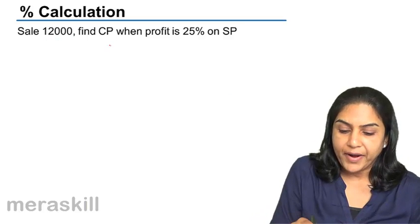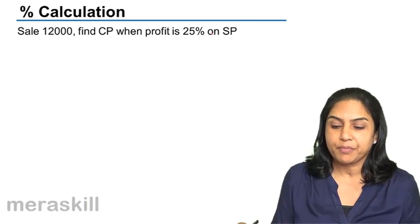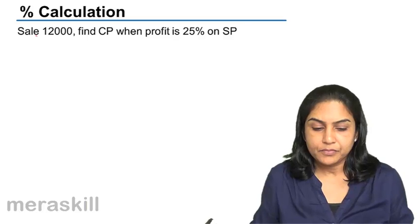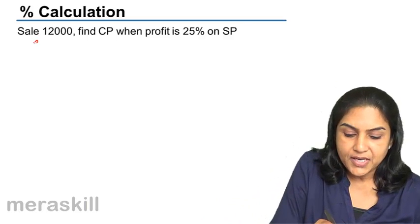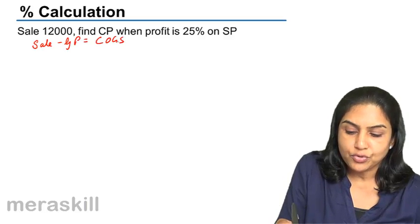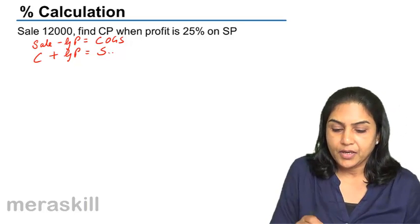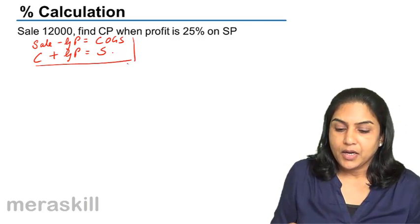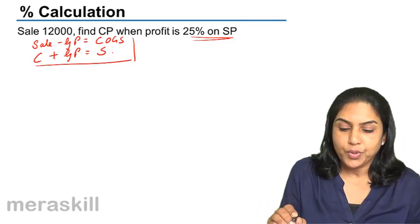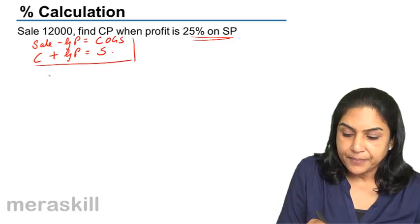Sale is 12,000 — find cost price when profit is 25% on selling price. We already know the formula: Sales minus GP equals cost of goods sold; if you get cost, then cost plus GP equals sales. Here, profit is 25% on selling price and sale is given, so there is not much computation here — it is direct and simple.